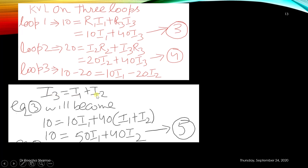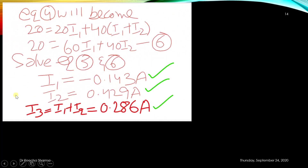Since I3 equals I1 plus I2, substituting into the loop equations: equation 3 becomes 10 equals 10·I1 plus 40·(I1 plus I2), simplifying to 10 equals 50·I1 plus 40·I2. Equation 4 becomes 20 equals 60·I1 plus 40·I2. Solving equations 5 and 6, we find I1 equals minus 0.143 ampere and I2 equals 0.429 ampere.